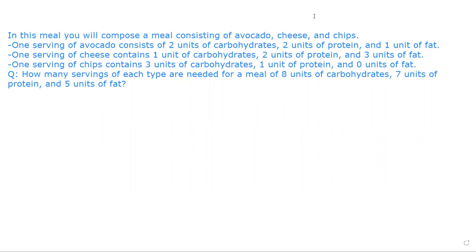One serving of avocado consists of two units of carbohydrates, two units of protein, and one unit of fat. One serving of cheese consists of one unit of carbohydrates, two units of protein, and three units of fat. And one serving of chips contains three units of carbohydrates, one unit of protein, and zero units of fat. And what we're trying to find is how many servings of each type are needed for a meal of eight units of carbohydrates, seven units of protein, and five units of fat.